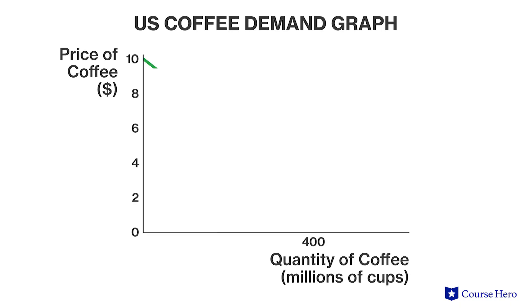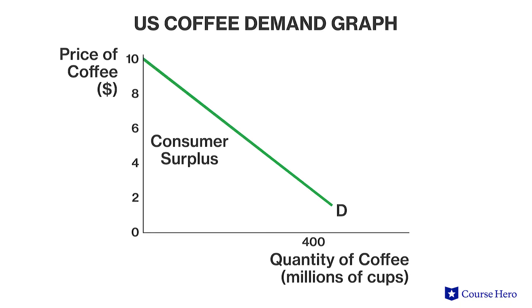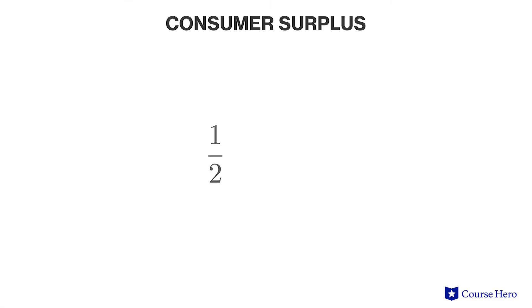With a smoothed out demand curve because of the size of the market, the consumer surplus — which is the area below the demand curve and above the market price — is now the area of a triangle. More specifically, it is a right triangle because two of the sides, the axes, form a right angle. The area of a right triangle is one half times the base times the height.